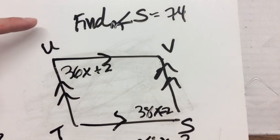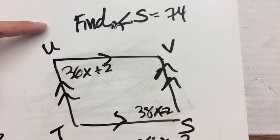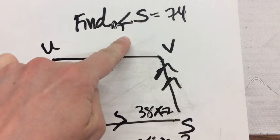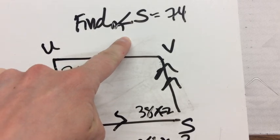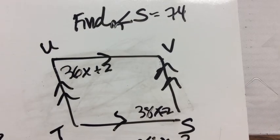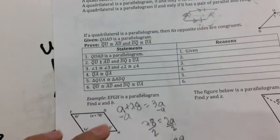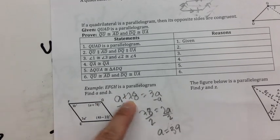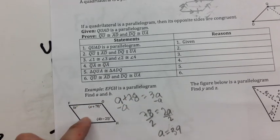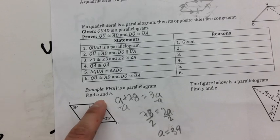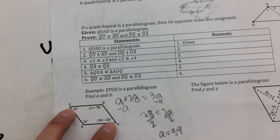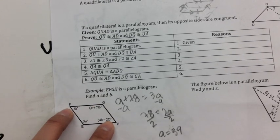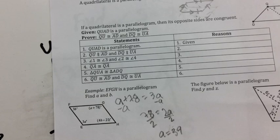Pay attention to what the instructions say. This problem said to find the measure of angle S, so we had to plug back in. On the previous problem, it just asked us to find A and B — find the variable — so we didn't have to plug it back in. For B, notice those are opposite angles too, so set them equal and solve.